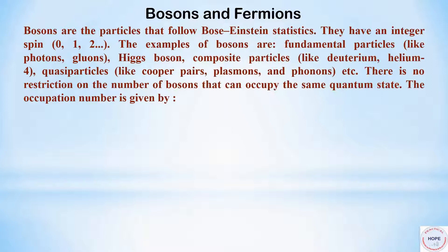First, what are bosons and fermions? Bosons are the particles that follow Bose-Einstein statistics. They have an integer spin: 0, 1, 2, etc. Examples of bosons are fundamental particles like photons, gluons, Higgs boson; composite particles like deuterium, helium-4; and quasiparticles like Cooper pairs, plasmons and phonons. There is no restriction on the number of bosons that can occupy the same quantum state.